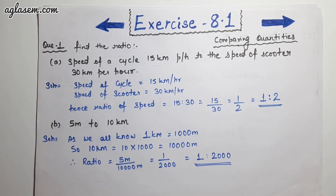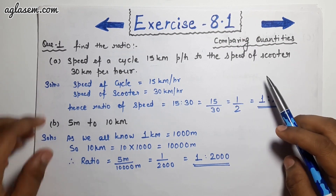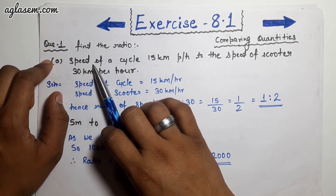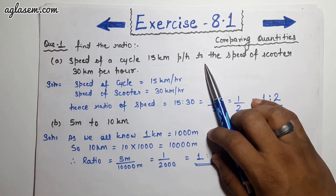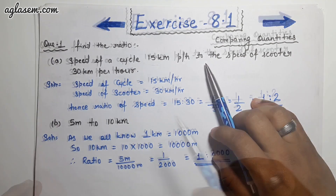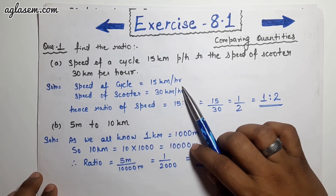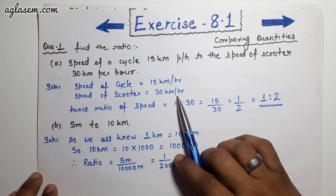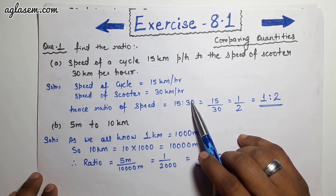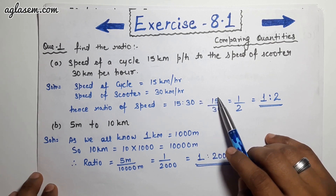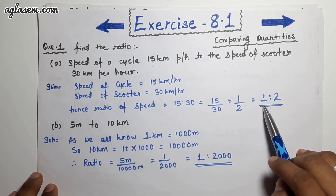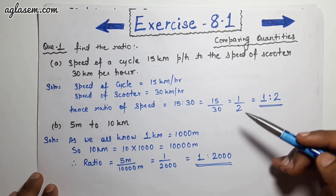The first question says: find the ratio. Part A says speed of a cycle is 15 km/h and speed of a scooter is 30 km/h. The ratio will be 15:30, which equals 15/30 = 1/2. So the ratio is 1:2.